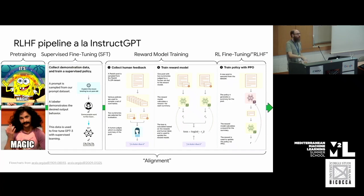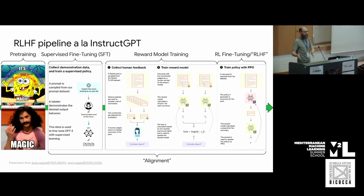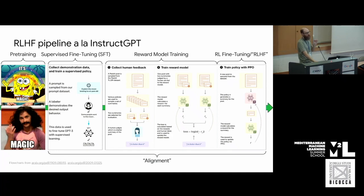Even though the whole thing after pre-training is usually called the alignment step or the post-training step, it's getting blurred. It used to be only two steps: pre-training and SFT. Now it's pre-training, SFT, and RLHF. Then they are adding calibration, so this pipeline is getting very complicated. This is a tutorial, so I'm trying to keep things simple.